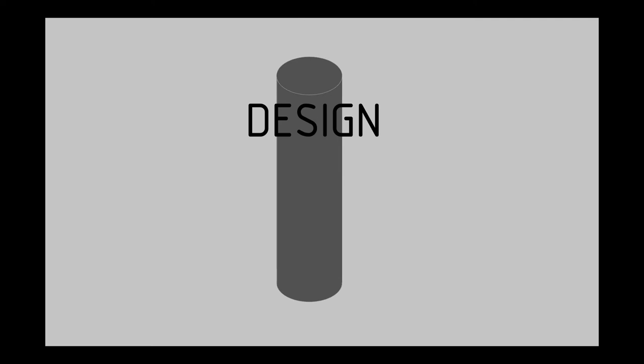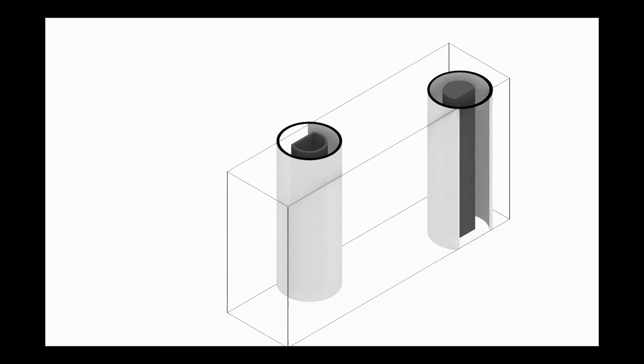The design process begins by extracting the circular core and adjusting it to the appropriate height. The two towers are trimmed by the bounding box edges — one yielding a hollow core for the elevator and the other a solid one for individual viewing parts.